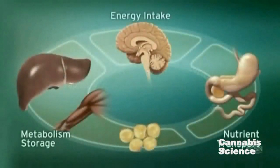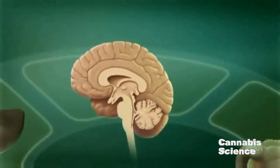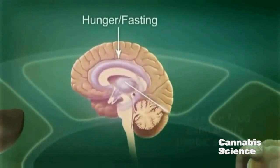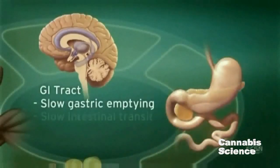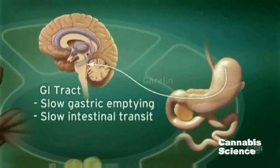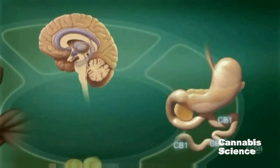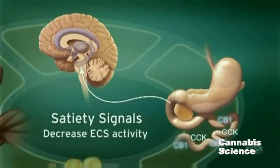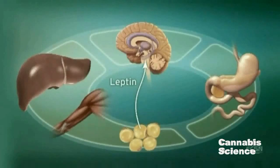Endocannabinoid system activity in the central nervous system regulates food intake. ECS stimulation by hunger and fasting signals stimulates appetite and increases the palatability of food. Endocannabinoids slow gastric emptying and GI transit and appear to stimulate secretion of ghrelin, a neuropeptide that increases appetite and food intake. After eating, cholecystokinin in the duodenum triggers satiety signals, and ECS activity is decreased through suppression of CB1 expression. An increase in the adiposity hormone leptin decreases endocannabinoid levels in the hypothalamus and decreases food intake.